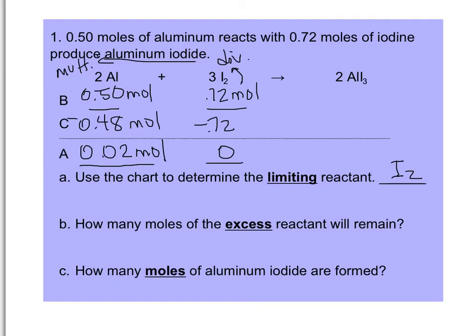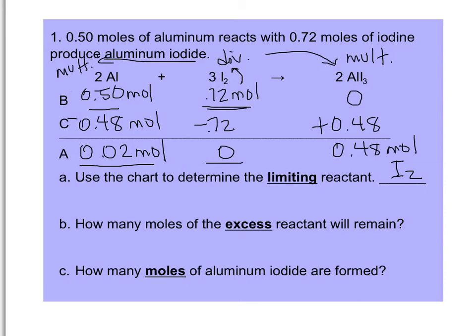The next step is to calculate how much product we get. This is based on the starting amount of the limiting reactant, because once it's gone, no more product can form and the reaction stops. We take the 0.72 moles of iodine, divide by 3, then multiply by 2. Products start at 0 and we add 0.48, so we end up with 0.48 moles of aluminum iodide as our product.